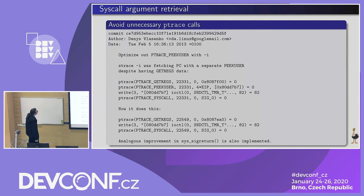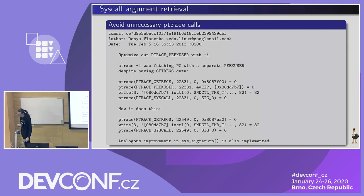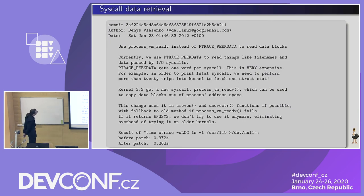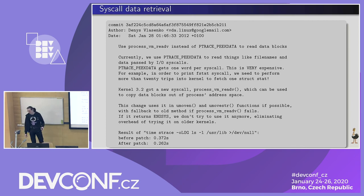The next thing is various optimizations specific to particular ptrace modes. As a leftover, a separate ptrace PEEKUSER request for the EIP register was left over and then patched. After obtaining the registers, we need to actually read data from the tracee. Historically this was done via the ptrace PEEKDATA interface, which allows reading tracee memory word by word — which is not very quick if you want to read some large structure or array.